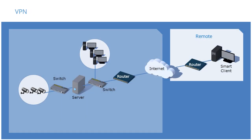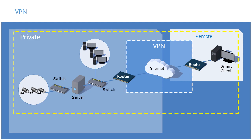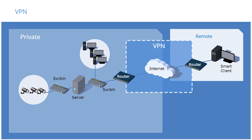A Virtual Private Network, VPN, extends a private network by establishing an encrypted virtual point-to-point connection across a public network, such as the Internet. A VPN connection can be either remote access, connecting a computer to a network, or site-to-site, connecting two networks. A remote access VPN can, for example, allow an employee or business owner to access the company network from home or while traveling outside the office.